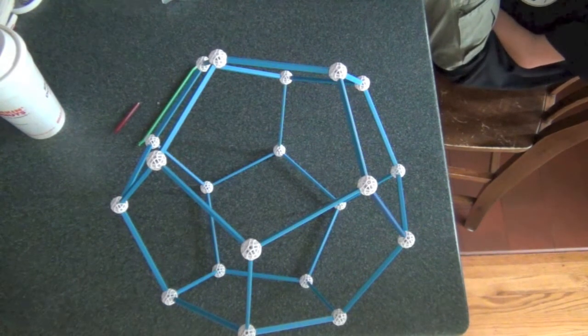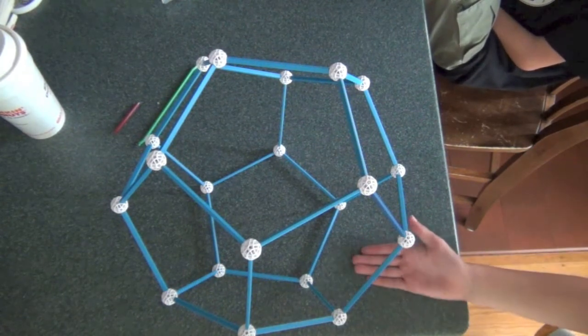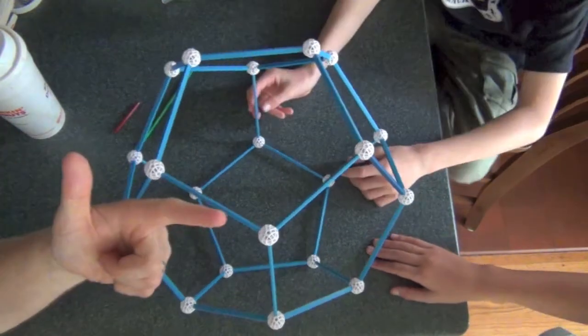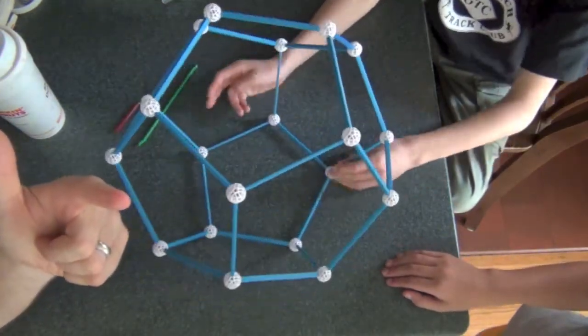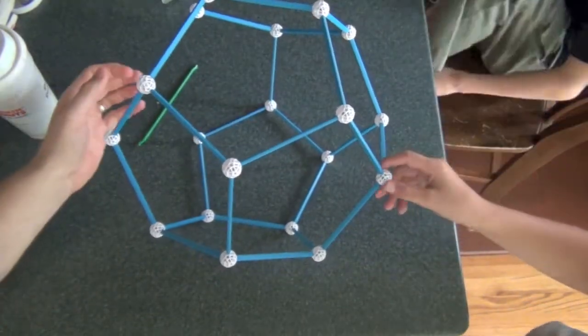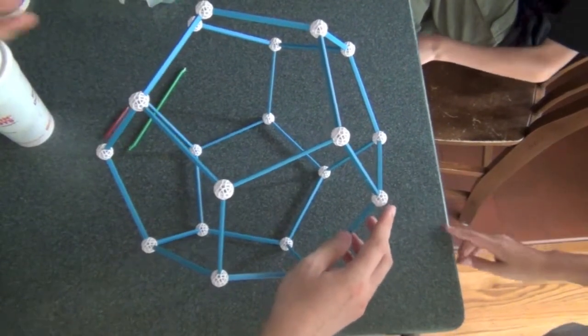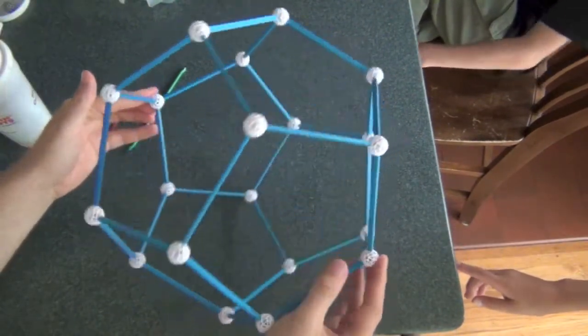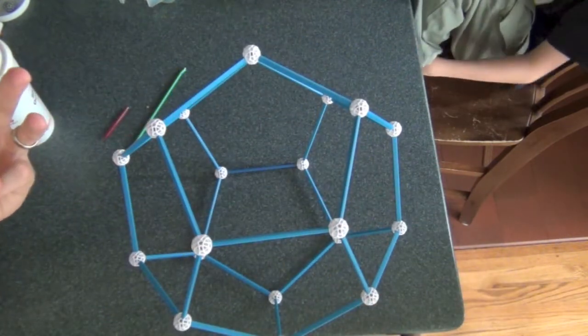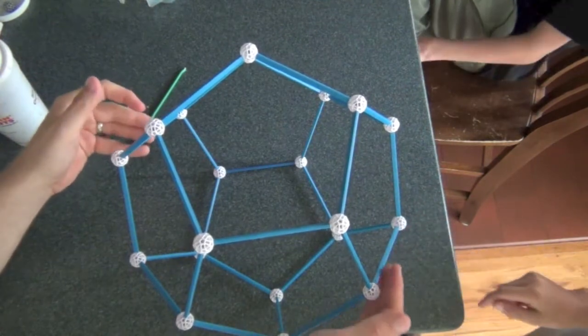How many different kinds of symmetries did we find? Well, the do-nothing one. That's one. We found the rotations. That's two. Vertices, flips. Flipping around the vertices like this. That was the third one. And then we found flipping around the edges.